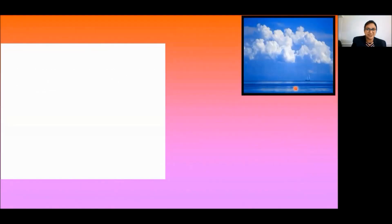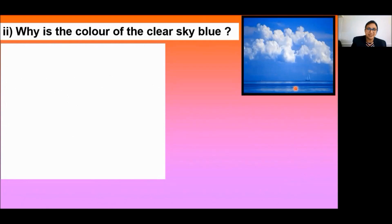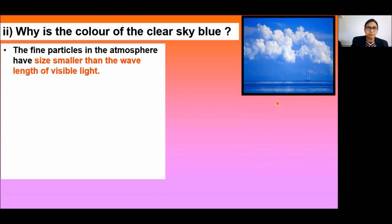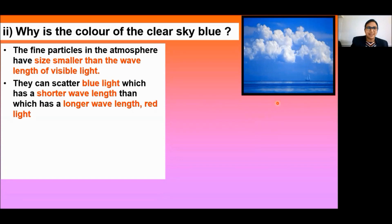Next question is, why is the color of the clear sky blue? Do you know the answer? As we have already mentioned earlier, the fine particle or molecular particles in the atmosphere have size smaller than the wavelength of visible light. They can scatter blue light, which has a shorter wavelength than red light, which has a longer wavelength.